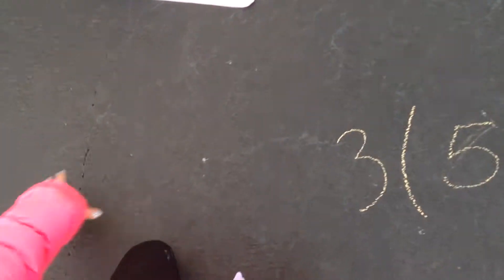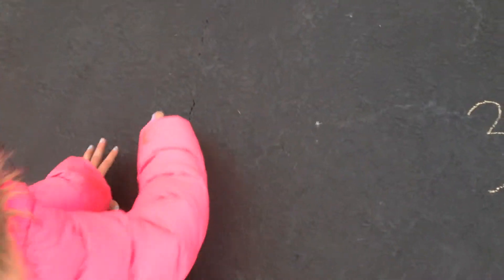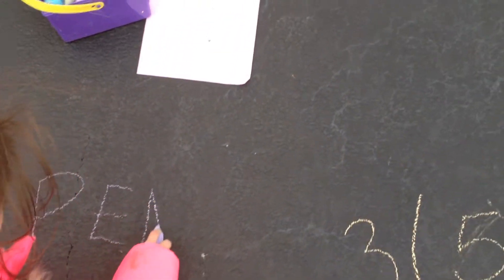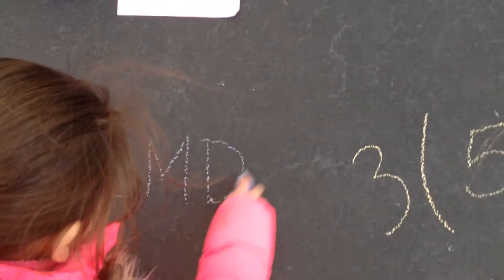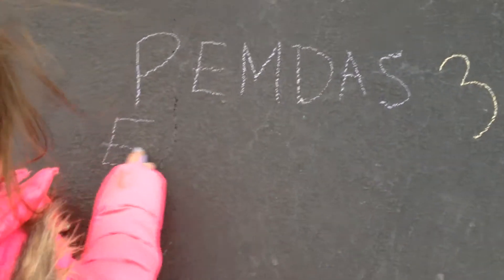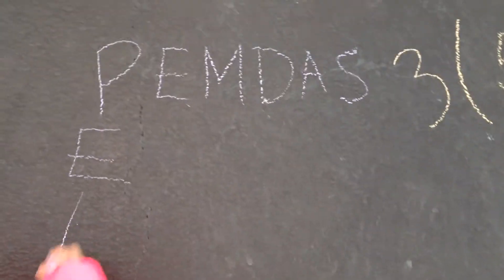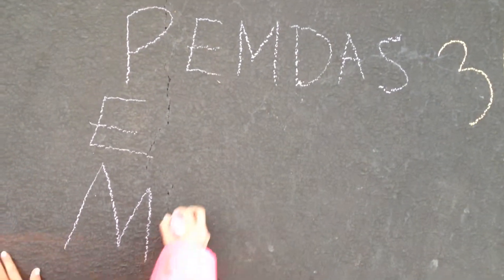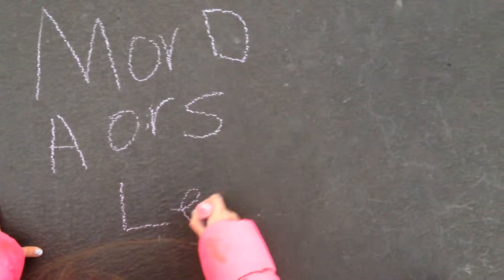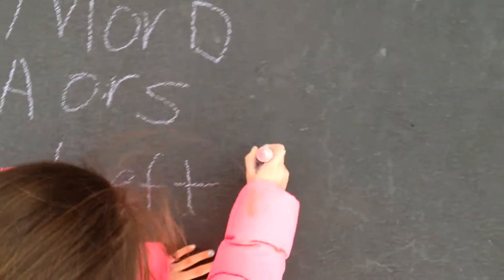An acronym that you can use to help you remember your order of operations is PEMDAS. You can also remember: Please Excuse My Dear Aunt Sally. Something you can write on the side of your paper is PE, then M or D, A or S, and then write 'left to right' to remind you that you go from left to right.